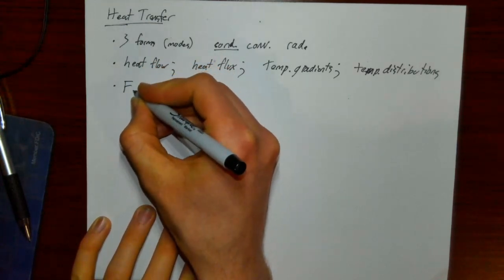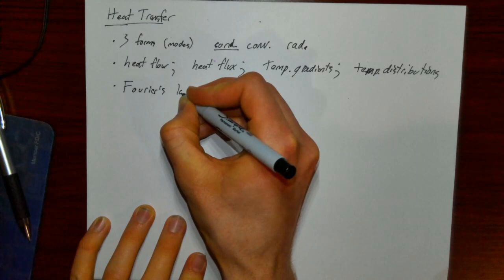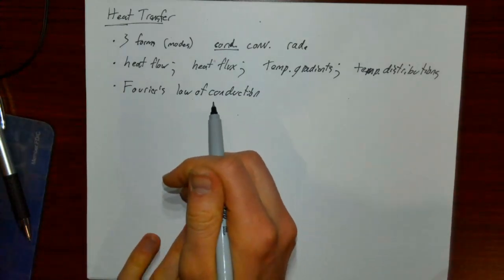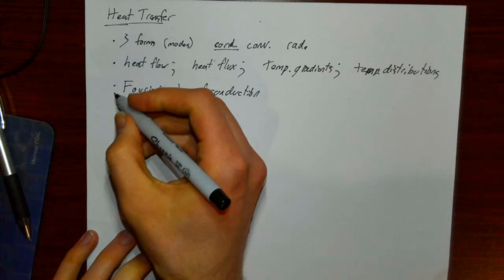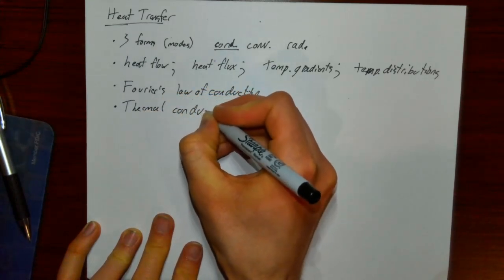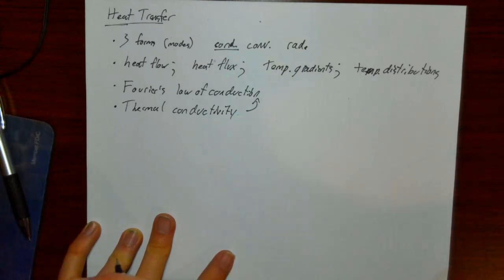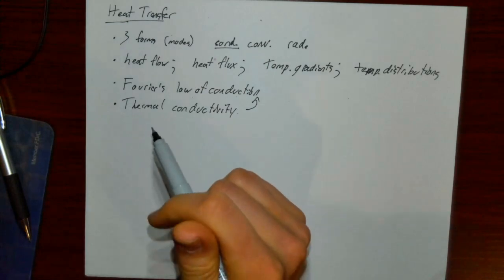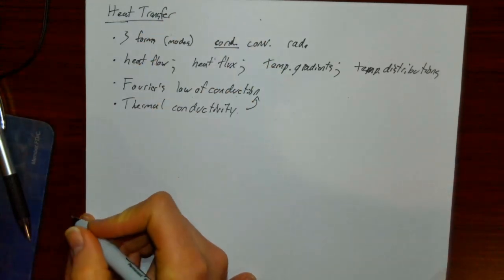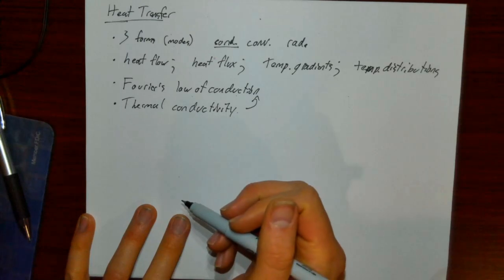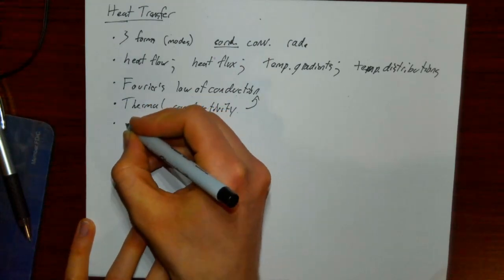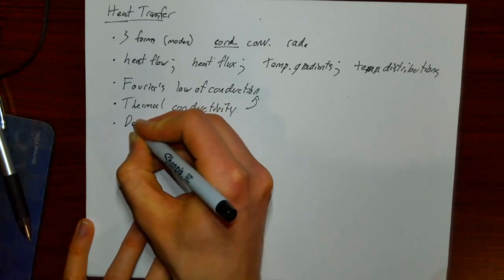Then we're going to talk about Fourier's law of conduction, which will bring some of these quantities into a mathematical relation to one another. One of the key parameters in Fourier's law is thermal conductivity. After that, I'll do two example problems: first, we're going to derive the temperature distribution within a wall.